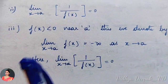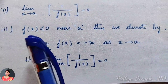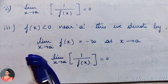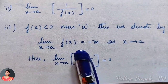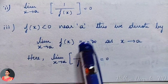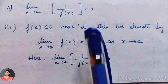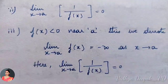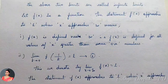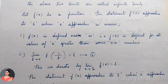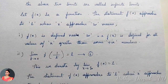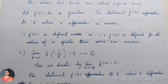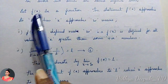Keep in mind: when f(x) is less than 0 near a, the limit as x tends to a of f(x) will be minus infinity. When f(x) is greater than 0 near a, it will be equal to plus infinity. These two limits are called infinite limits.